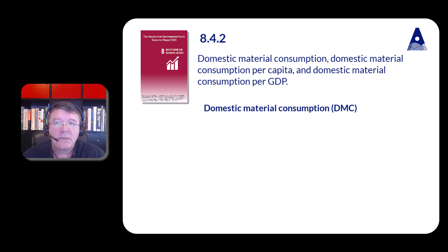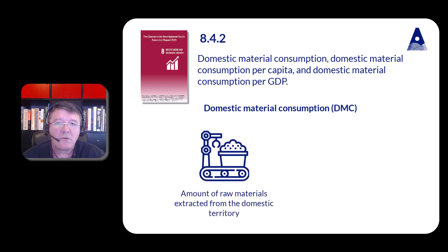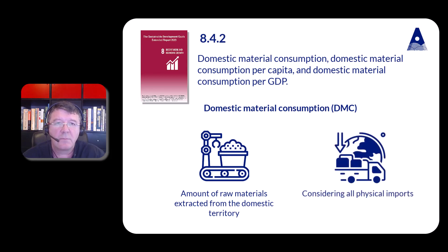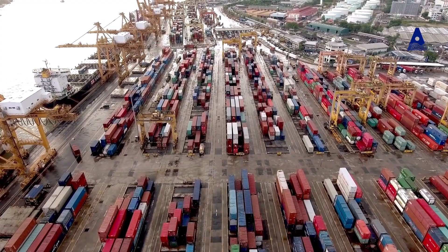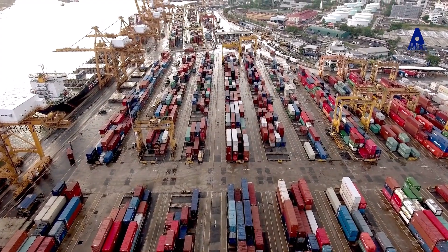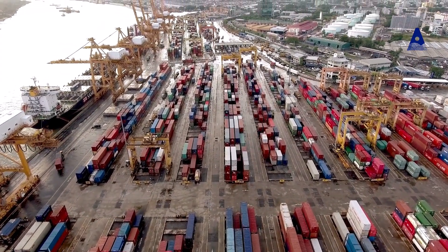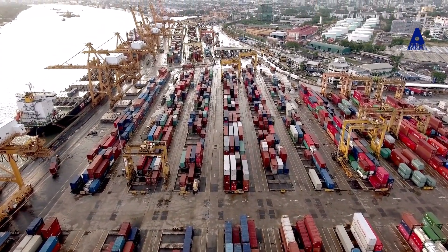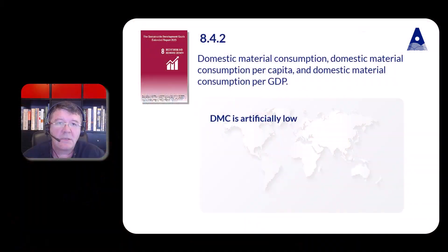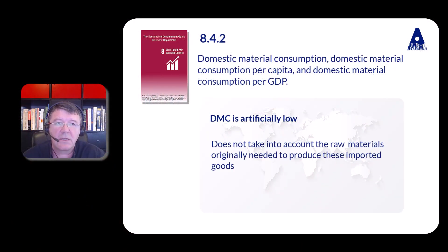DMC is defined as the amount of raw materials extracted from the domestic territory, considering all physical imports and subtracting all physical exports. At the same time, when an economy is not oriented towards the domestic extraction of natural resources but mainly imports goods, the DMC is artificially low, as it does not take into account the raw materials originally needed to produce these imported goods.